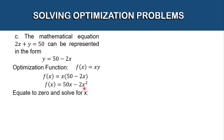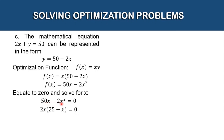After this, we equate it to 0 to find the value of x. So we have 50x - 2x² = 0, which is equivalent to 2x(25 - x) = 0. The GCF of 50x and 2x² is 2x, so we factor it out. What remains from 50x is 25, and from 2x² is x.